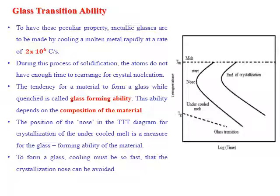Glass forming ability differs for different materials and depends on the composition of the material being produced. The position of the nose in the TTT diagram is very important for crystallization of an undercooled melt and is a key factor in analyzing the glass forming process. For a material to form a glass, cooling must be so fast that the crystallization nose in the TTT diagram is avoided.